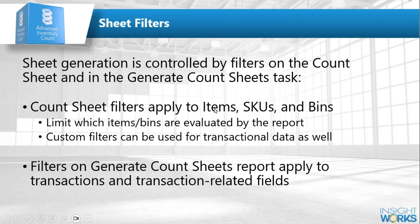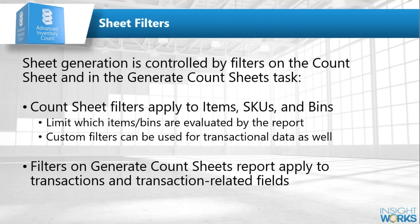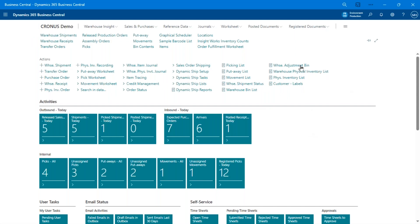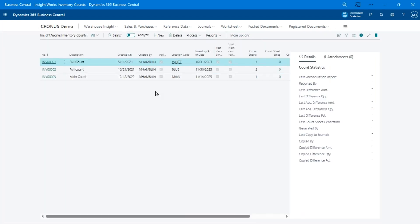When you generate those sheets, you can filter them in a couple of ways. Directly on the count sheet you can set filters to limit what's shown on a specific sheet — by warehouse area, team, and so on. When generating sheets, you can also apply transactional filters, such as only including items you have in stock or only items that have had a transaction within a certain period. There are two layers of filters to restrict what items appear on count sheets.